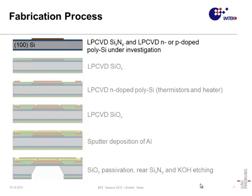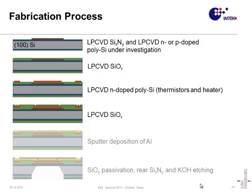For the fabrication of the devices, 4-inch (100) silicon substrates are used. This slide shows the fabrication process for the thermal conductivity test structure. First, 350 nanometers of silicon nitride are deposited. Then, the LPCVD in-situ doped polysilicon under investigation is deposited and patterned. The polysilicon is covered by an LPCVD silicon oxide, and another polysilicon layer is deposited to realize the temperature sensors and the heater, again covered by silicon oxide. An aluminum layer is deposited to contact the temperature sensors and heaters and to realize temperature homogenization layers, then covered by silicon oxide. On the rear side, an additional PECVD silicon nitride layer is deposited and serves as an etch mask for the subsequent membrane release by anisotropic silicon etching using KOH.